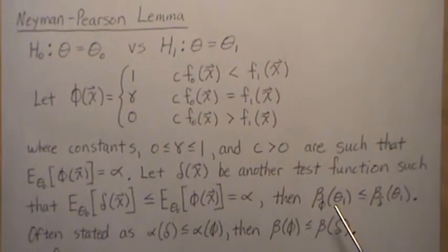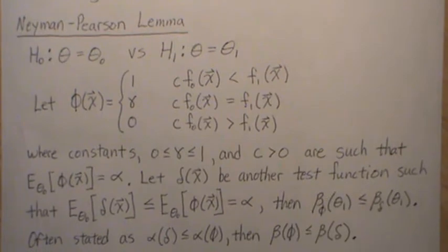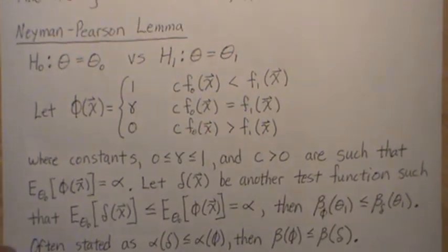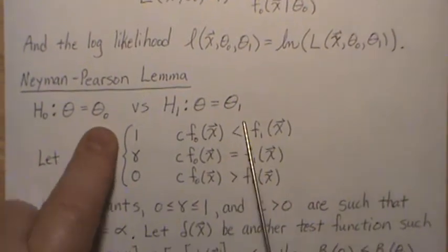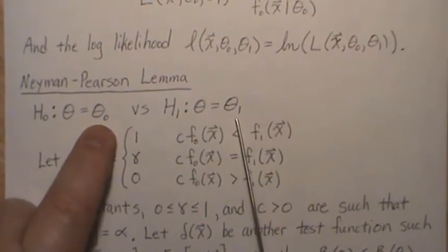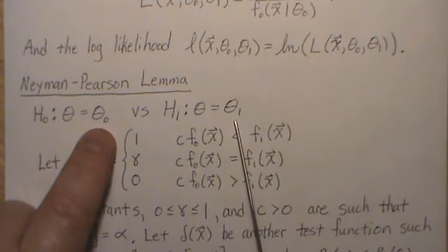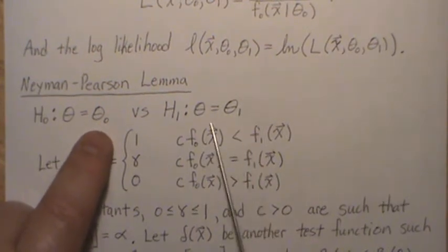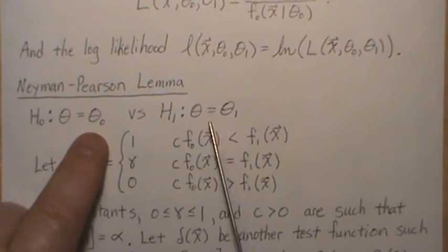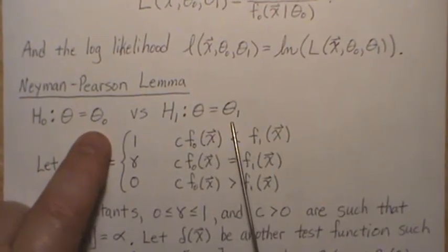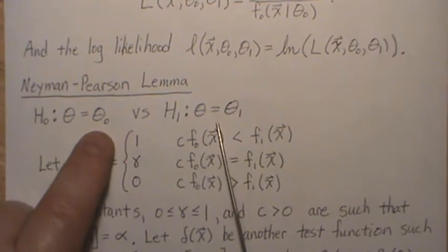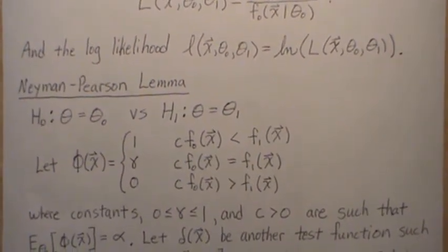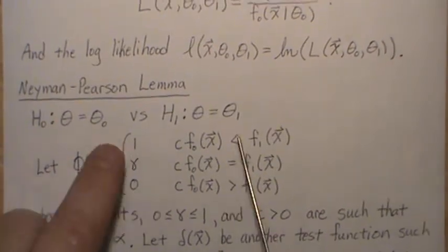Now quick question just out of it: why am I not saying a uniformly most powerful test? And the answer is because we are doing a simple versus simple hypothesis test, and so it's just most powerful. Now if one of these or more are composite, and I think specifically the alternative has to be composite hypothesis, then you can talk about what uniformly most powerful, but you can't hear because it's simple versus simple.